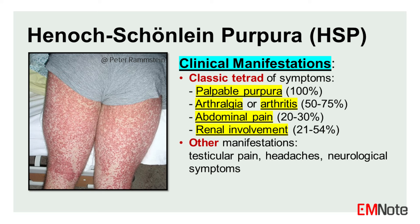Third, abdominal pain: caused by vasculitis involving the gastrointestinal tract, leading to colicky abdominal pain, nausea, vomiting, or gastrointestinal bleeding. Fourth, renal involvement: ranging from mild proteinuria and hematuria to severe nephritis, which can progress to chronic kidney disease in rare cases.